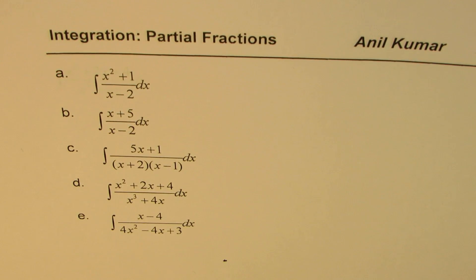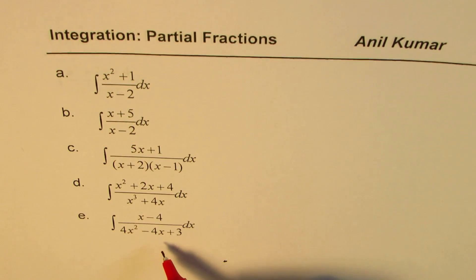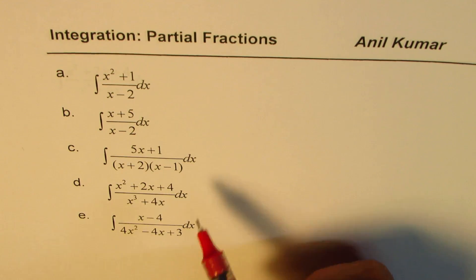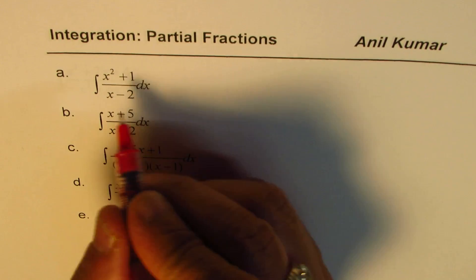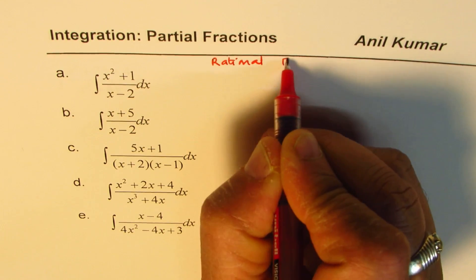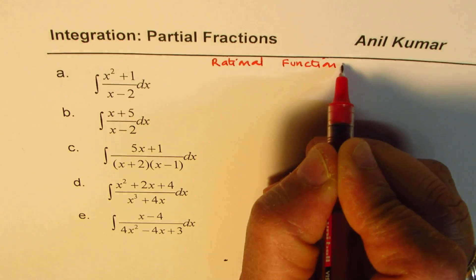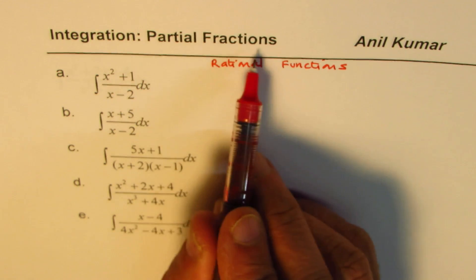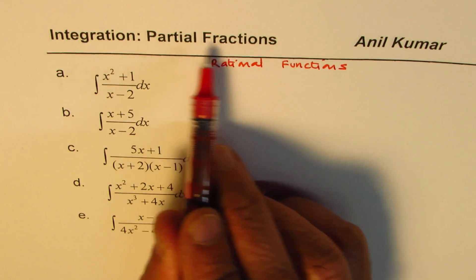I'm Anil Kumar, sharing with you some questions which we are going to solve using partial fractions. Now, we need to integrate all these functions, and they are all, as you can see, rational functions. So a method to find the integration of rational functions is partial fractions. So we are working on rational functions, right? So most of the rational functions can be integrated using this method of integration, which is called partial fractions.